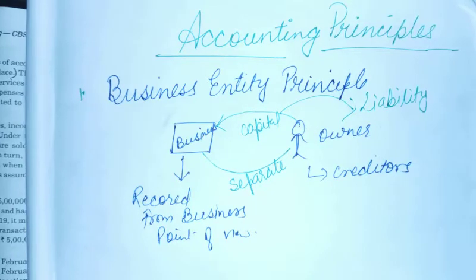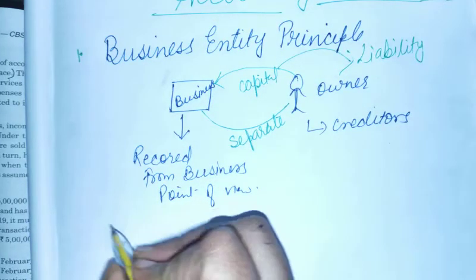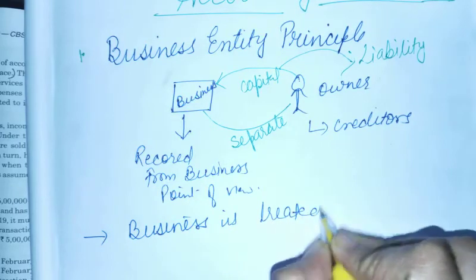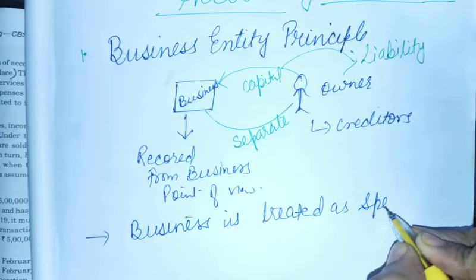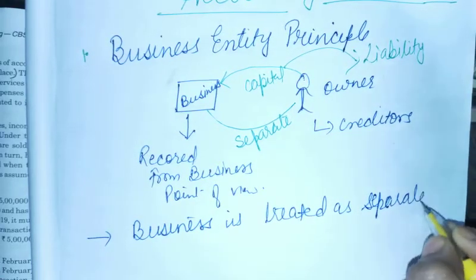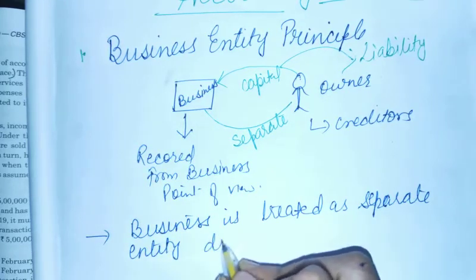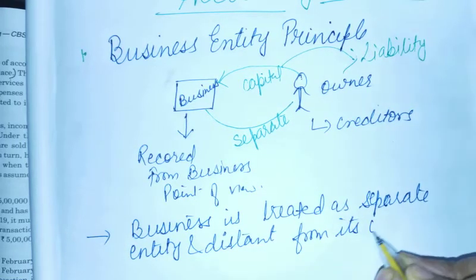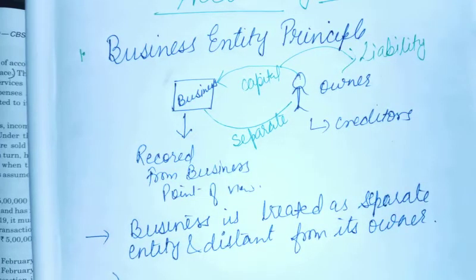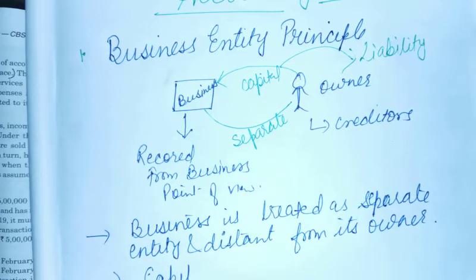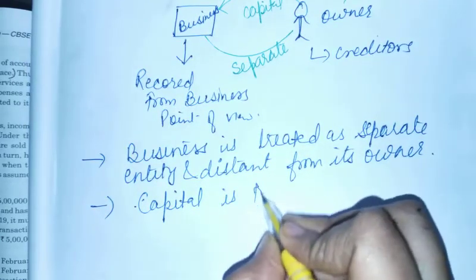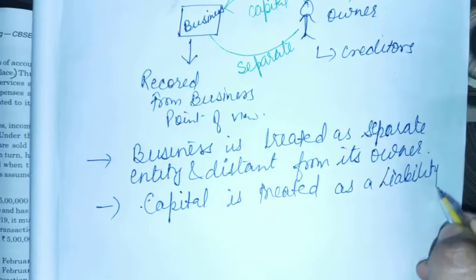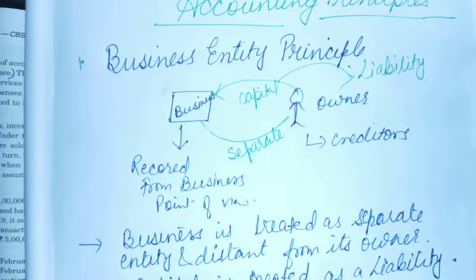So, business is treated as a separate entity and distinct from its owner. और इसलिए हम लोग यहाँ पर capital को liability treat करते हैं — capital is treated as a liability. तो यह था हमारा Business Entity Concept.